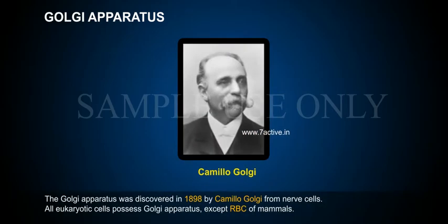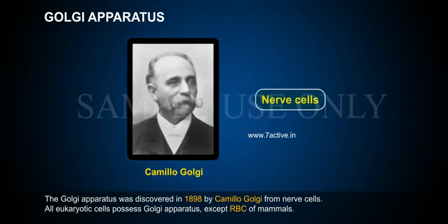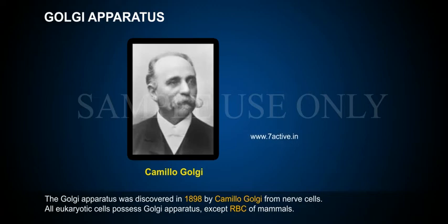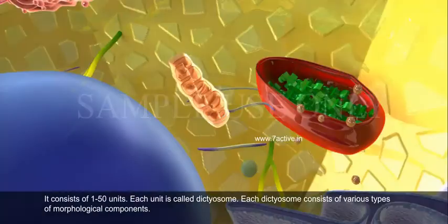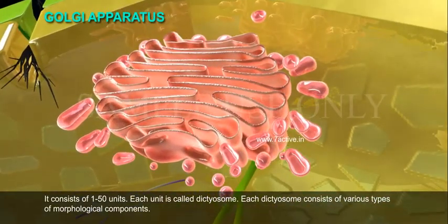Golgi Apparatus. The Golgi apparatus was discovered in 1898 by Camillo Golgi from nerve cells. All eukaryotic cells possess Golgi apparatus except RBCs of mammals. It consists of 1 to 50 units, and each unit is called a dictyosome.